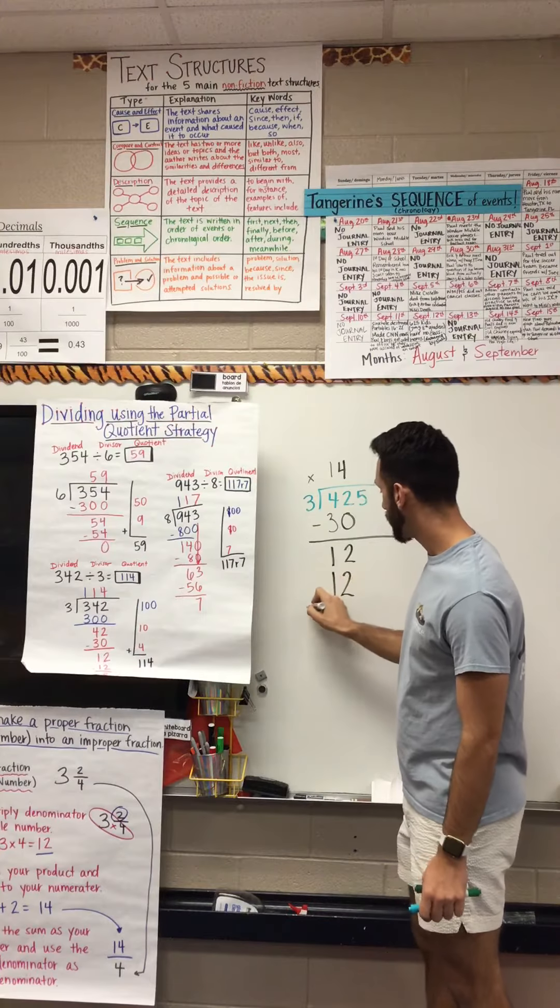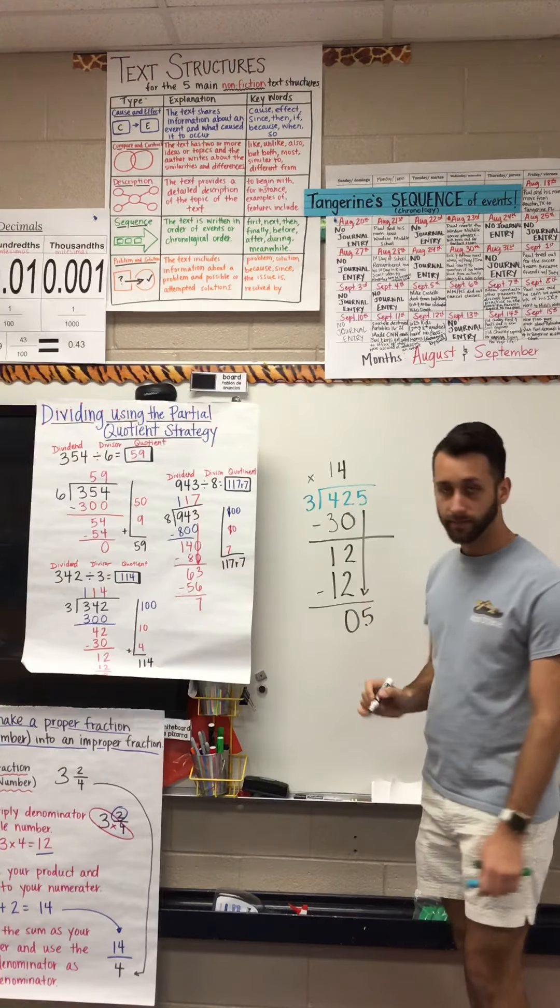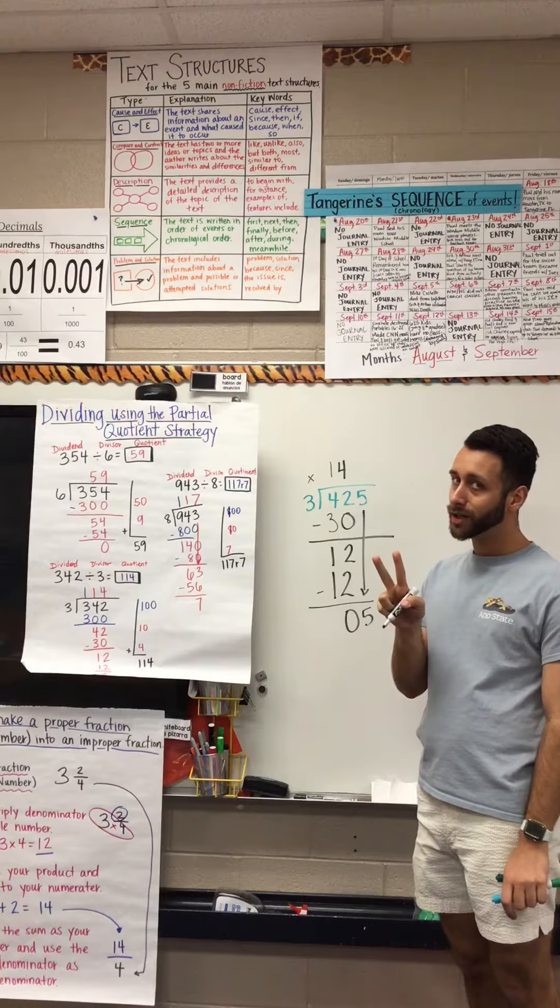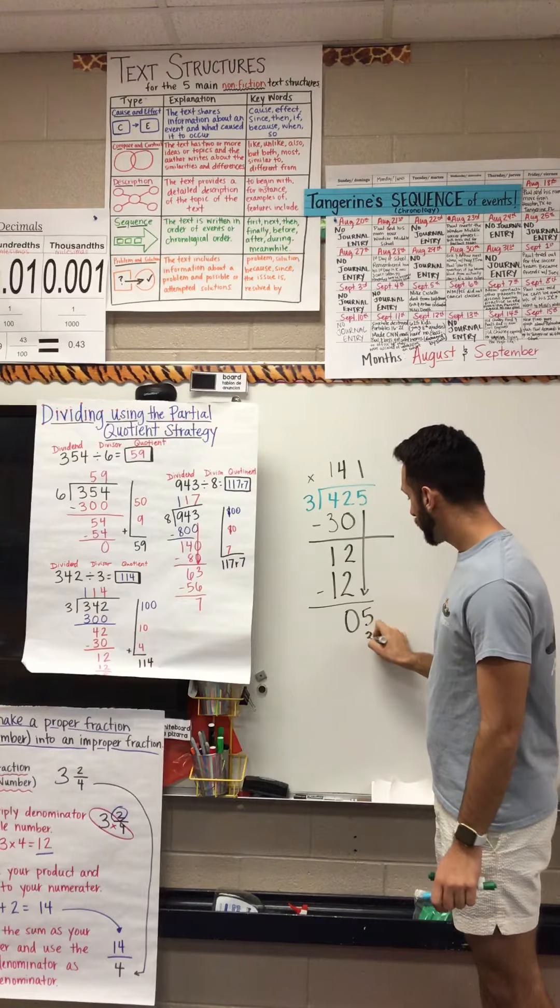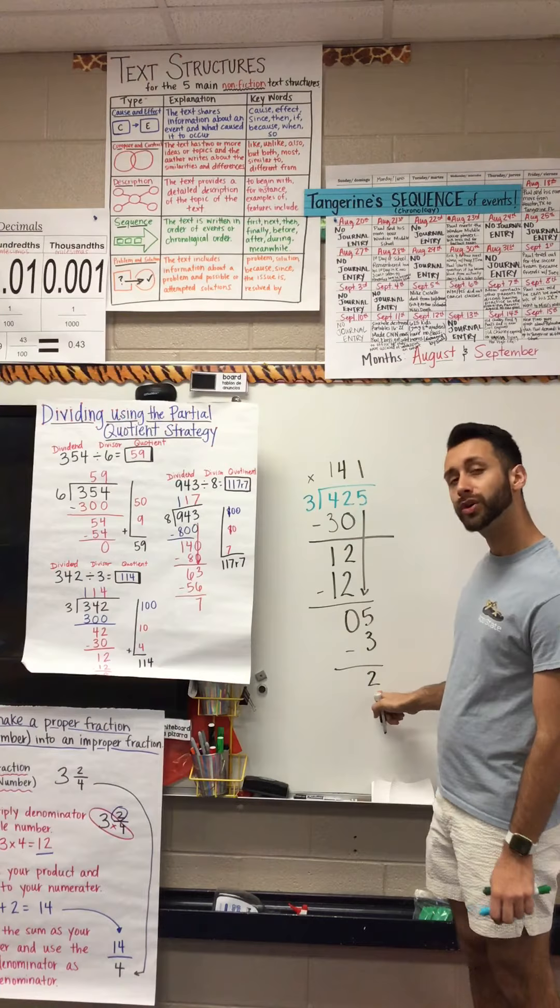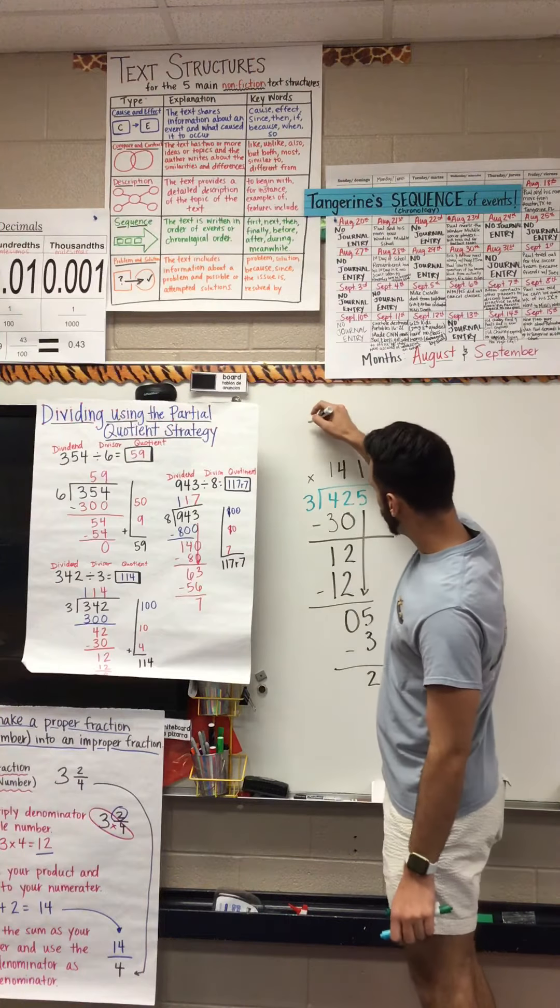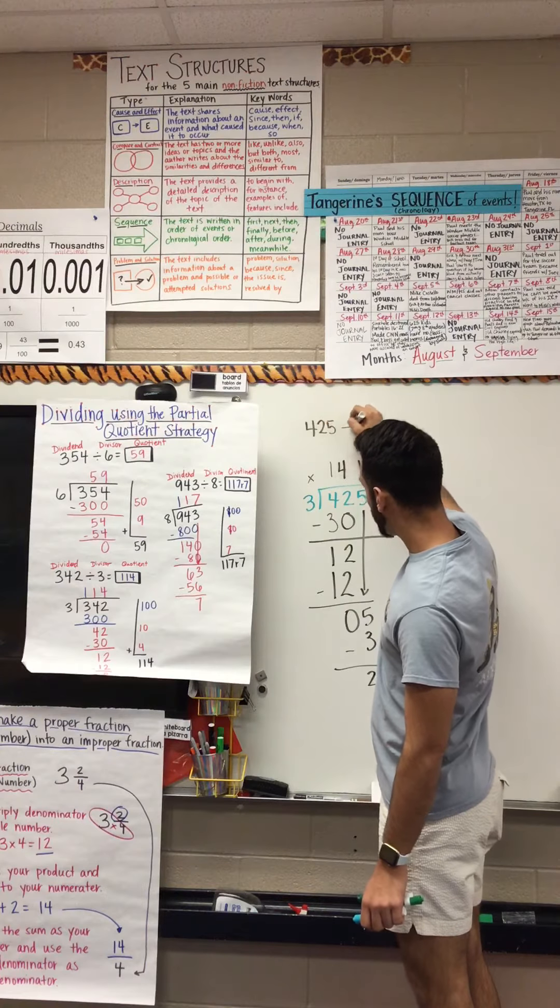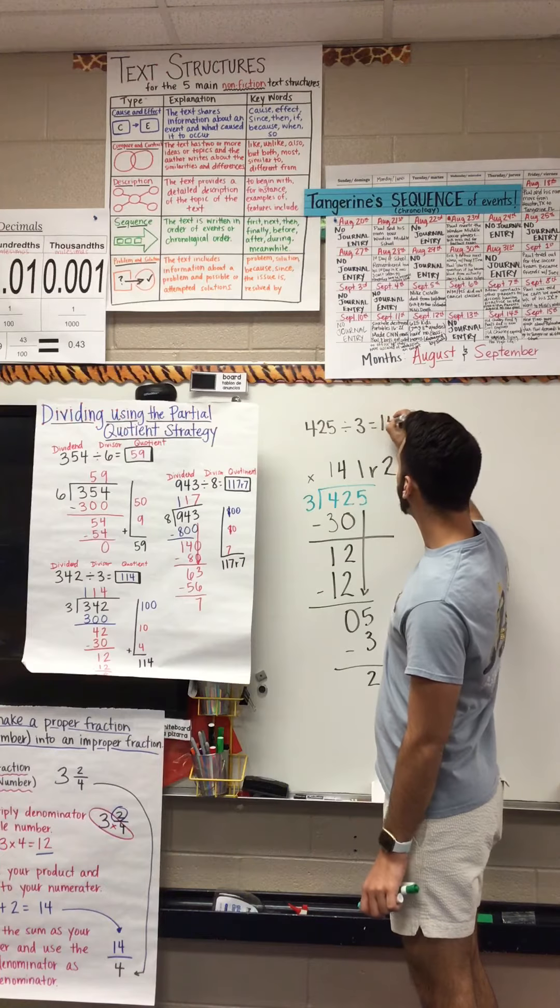Then you have to bring down your 5. Three goes into five... three, six. Six is too much, so it's only one. One times three is three. Subtract that. 5 minus 3 is 2, so this 2 is now your remainder. So your dividend 425 divided by your divisor 3 is going to equal your quotient, which is 141 with a remainder of 2.